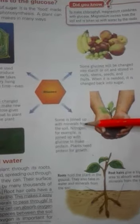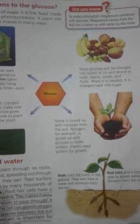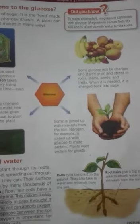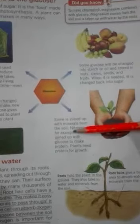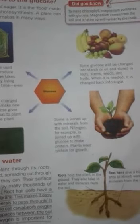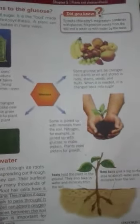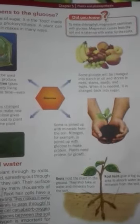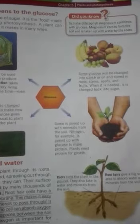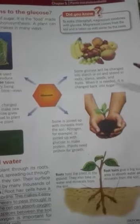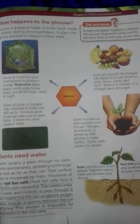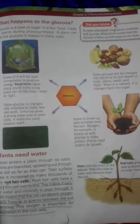The fourth use is that some glucose is joined up with minerals from the soil. For example, nitrogen is present in the soil and it reacts with glucose to form protein. That protein is very useful for the growth of the plant. These are the four ways in which glucose produced by photosynthesis in the leaves of plants is used.